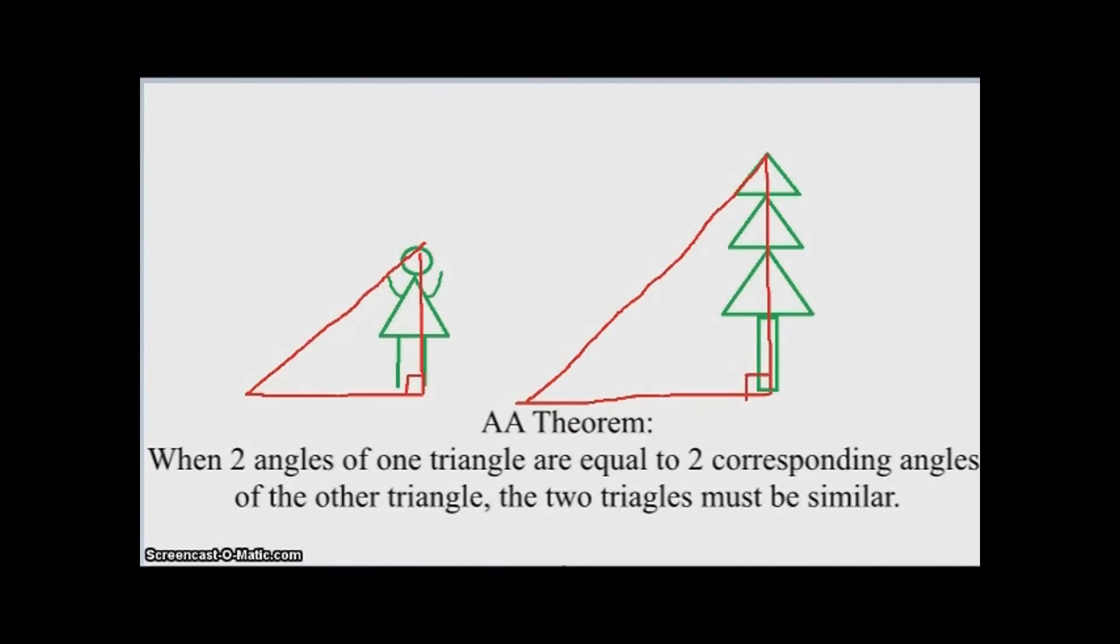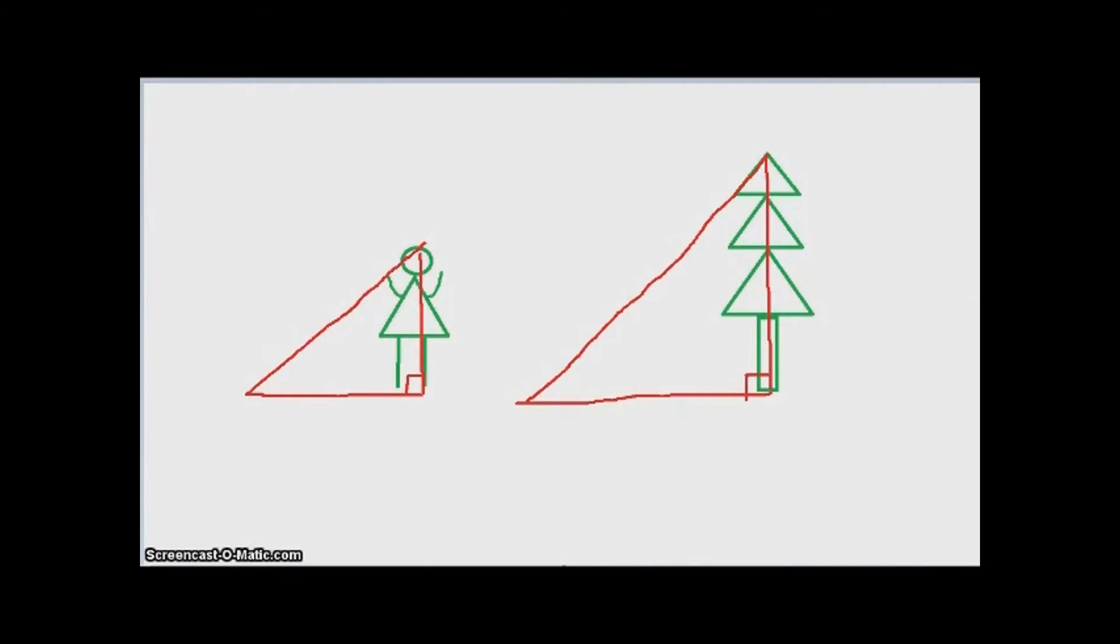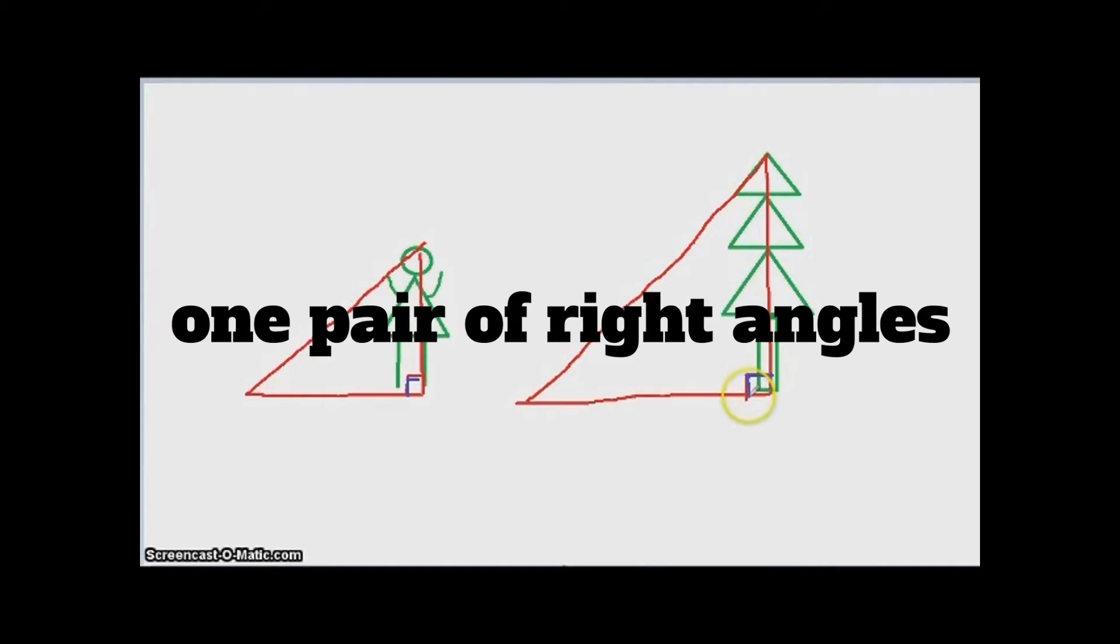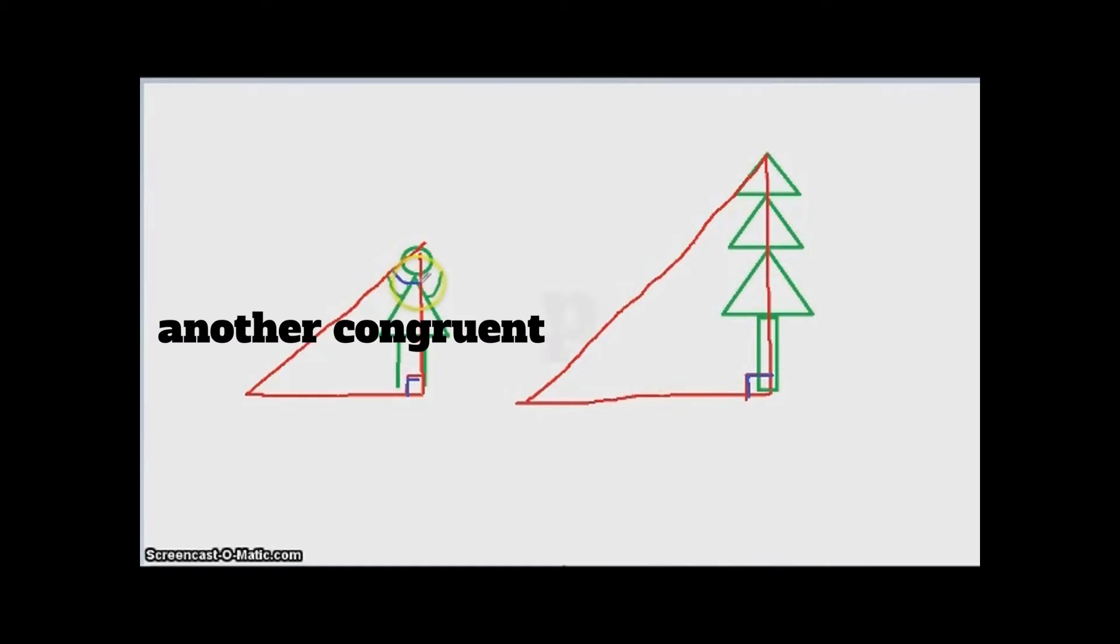if two pairs of angles in these two triangles are congruent, then these two triangles are similar. They already have a pair of right angles. Both of them are 90 degrees. That's a pair. They also have another pair of acute angles. They are congruent.